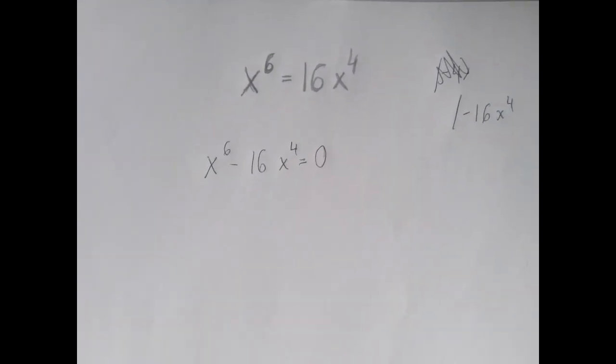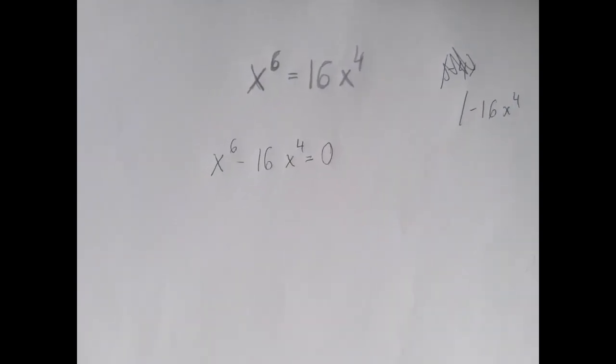And now that one side is zero, we can start factoring the other side. On the left-hand side, we have a degree 6 expression, but there is a big greatest common factor, because both terms are divisible by at least x^4.